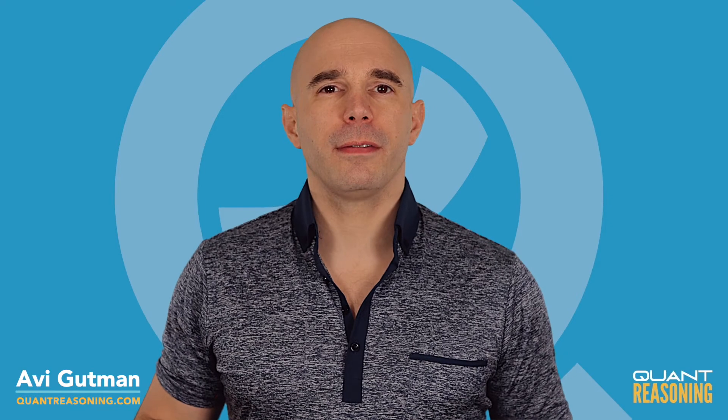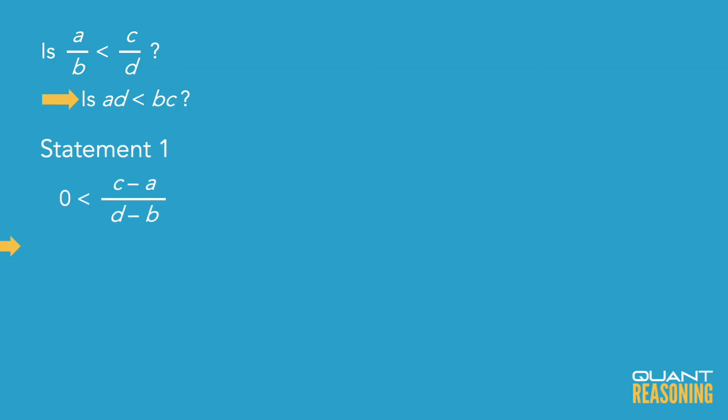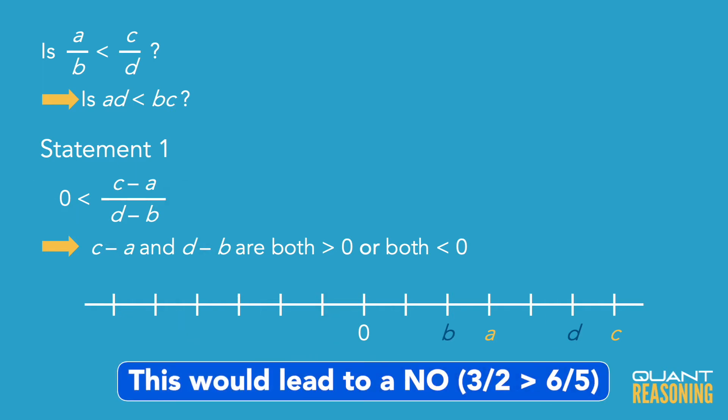So what can we infer from statement one? If we know that a ratio is positive, that means that the top and the bottom of the ratio are on the same side of 0. So either C minus A and D minus B are both positive, or C minus A and D minus B are both negative.